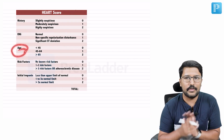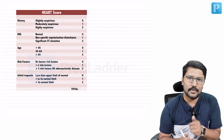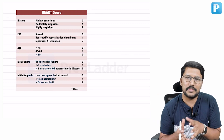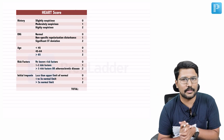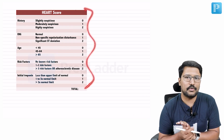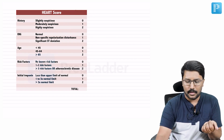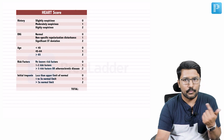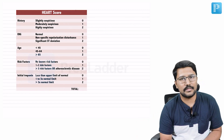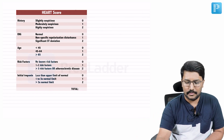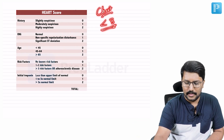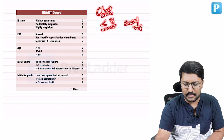HEART score also considers ECG findings — whether suggestive of ischemia or not — the age of the patient (with increasing age, chances of IHD and ACS increase), presence or absence of risk factors for atherosclerotic coronary vascular disease, and the initial troponin level. A HEART score of more than three is highly suggestive of acute coronary syndrome. A score of three or less, with serial troponins also negative, kind of rules out ACS and you can consider early discharge.